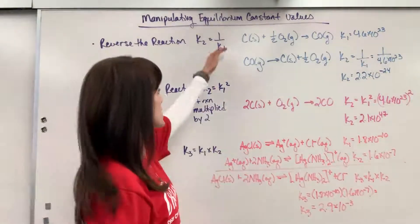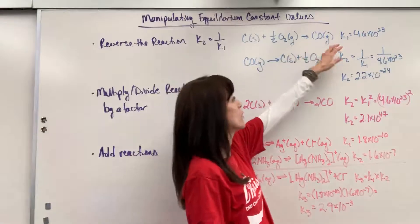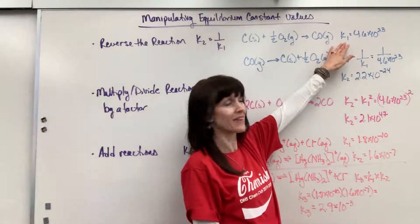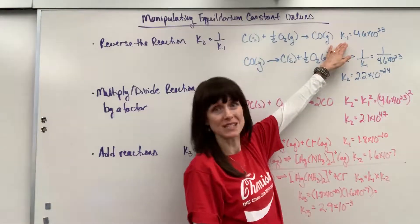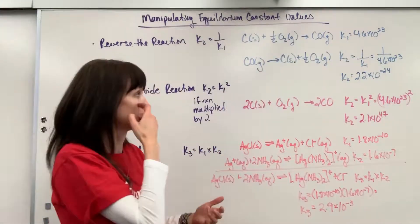So let's take a look at this. Here is my chemical equation. We've got carbon plus one half oxygen. The equilibrium expression for that is 4.6 times 10 to the 23. Well, let's flip it. I'm going to now write products as reactants, reactants as products.